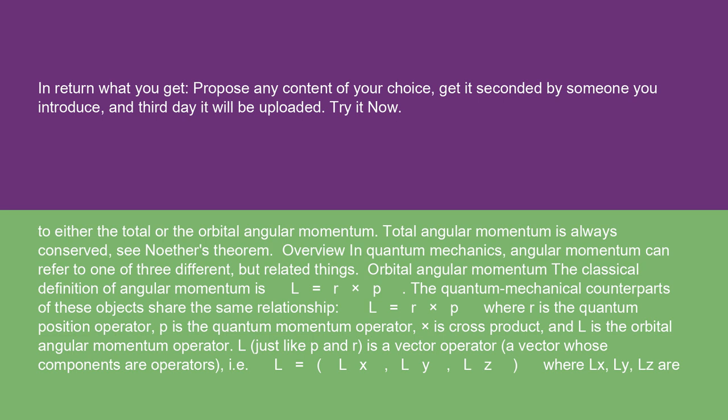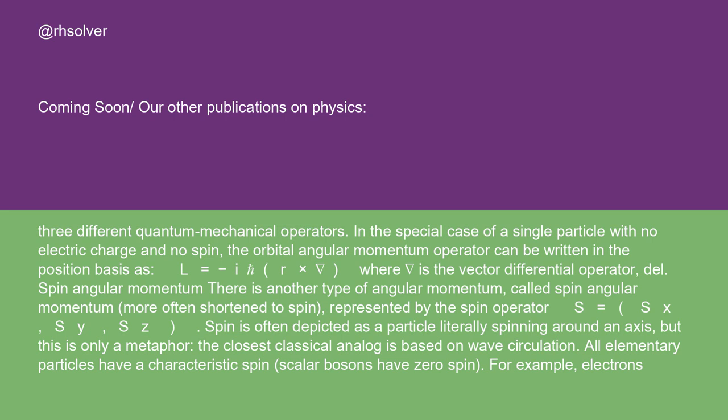In quantum mechanics, angular momentum can refer to one of three different but related things. Orbital angular momentum: the classical definition is L = r × p. The quantum mechanical counterparts share the same relationship, L = r × p, where r is the quantum position operator, p is the quantum momentum operator, and L is the orbital angular momentum operator. L, just like p and r, is a vector operator — a vector whose components are operators, i.e., L = (Lx, Ly, Lz). In the special case of a single particle with no electric charge and no spin, the orbital angular momentum operator can be written in the position basis as L = −iℏ(r × ∇), where ∇ is the vector differential operator del.